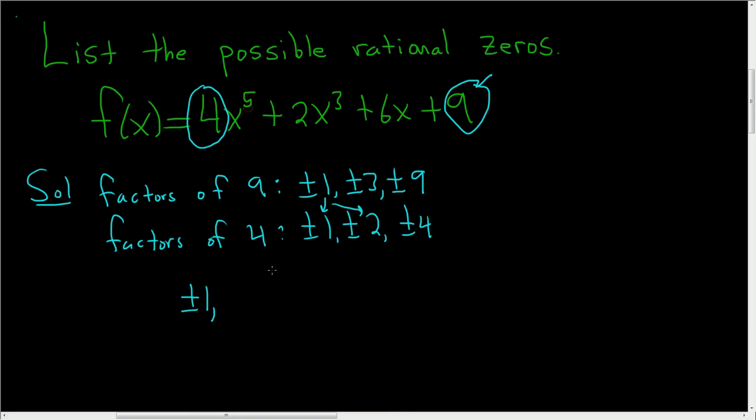Then you do 1 over 2. So 1 over 2 is just 1 over 2, so plus or minus 1 half. And then lastly, you look at 1 over 4. So 1 over 4 is plus or minus 1 fourth.